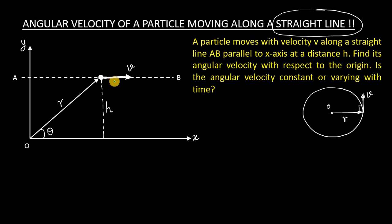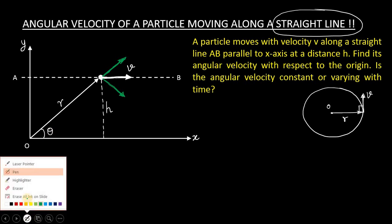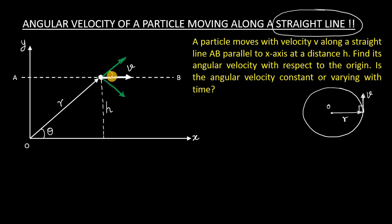We make two components of velocity: one component perpendicular to the r vector, and the other parallel to the r vector. Both components are perpendicular to each other — these are called rectangular components. Looking at angle theta here, the same angle theta can be identified in the triangle. The component making angle theta with the velocity vector is the cosine component v cosθ, and the other is v sinθ.